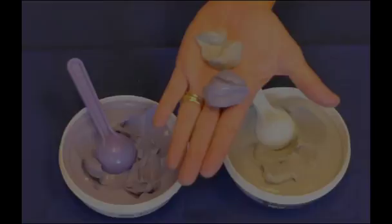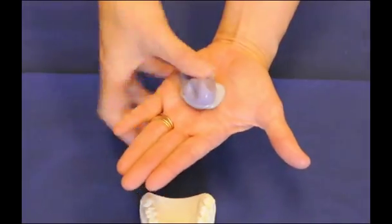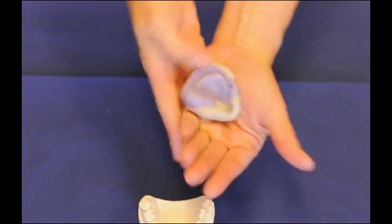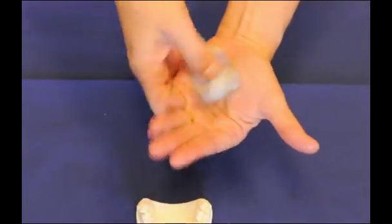I like the Flexi-Time Putty, as it's a putty-putty system, and it has some flexibility even after cured, which makes it perfect for a reduction matrix.